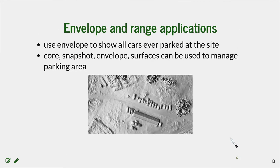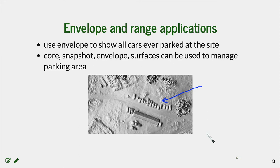You can also use the envelope to monitor smaller features. For example, along our building there are usually parked cars. There was never this many cars parked at once, but the envelope accumulates all cars that were ever parked there during the survey. So you can identify the full extent of the area where people typically park, and use these monitoring results to manage the parking area — identifying if people park where they shouldn't or if additional space is needed.